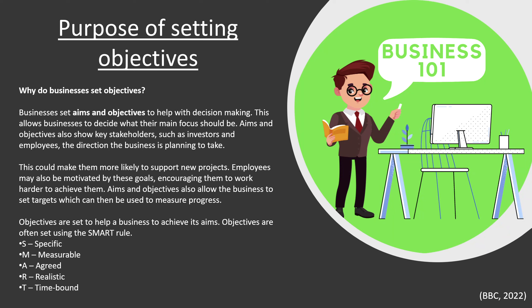Employees may also be motivated by these goals, encouraging them to work harder to achieve them. For example, if you have aims to provide positive impacts for people in society by being more environmentally friendly — which will be better for people in the future and the planet — your employees may like that and work harder because they agree with the goals and aims behind the business they work for. Aims and objectives also allow the business to set targets, which can then be used to measure progress. Objectives are often set using the SMART rule — an acronym meaning Specific, Measurable, Agreed, Realistic, and Time-bound.